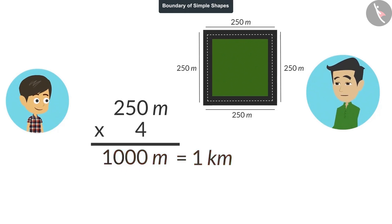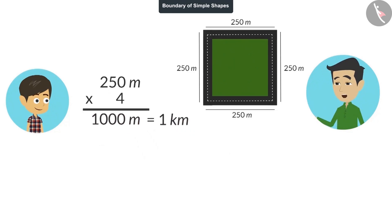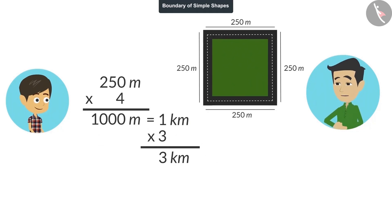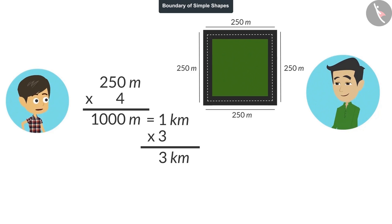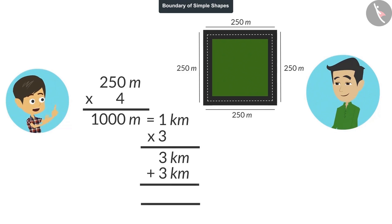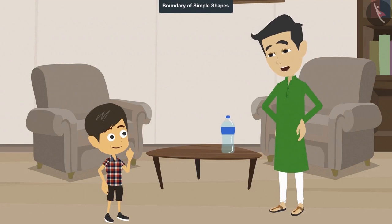All right. Now tell me, how many rounds do I have to take of this boundary to complete 3 kilometers? For a 3 kilometer walk, you have to take 3 rounds of this boundary. Perfect, Rayansh. And this is what I do. I take 3 rounds of this boundary. This tells me that I have walked 3 kilometers.